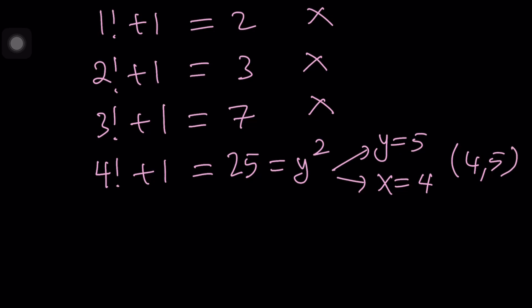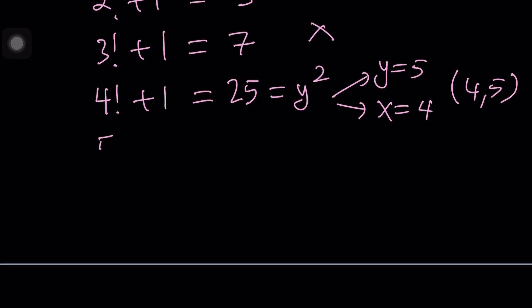Let's continue hoping we'll catch more solutions. 5 factorial plus 1 is 120 plus 1 is 121. That also happens to be a perfect square. From here we get y equals 11 and x equals 5. That means 5, 11 is another solution. Wow this was easy right? Not really.